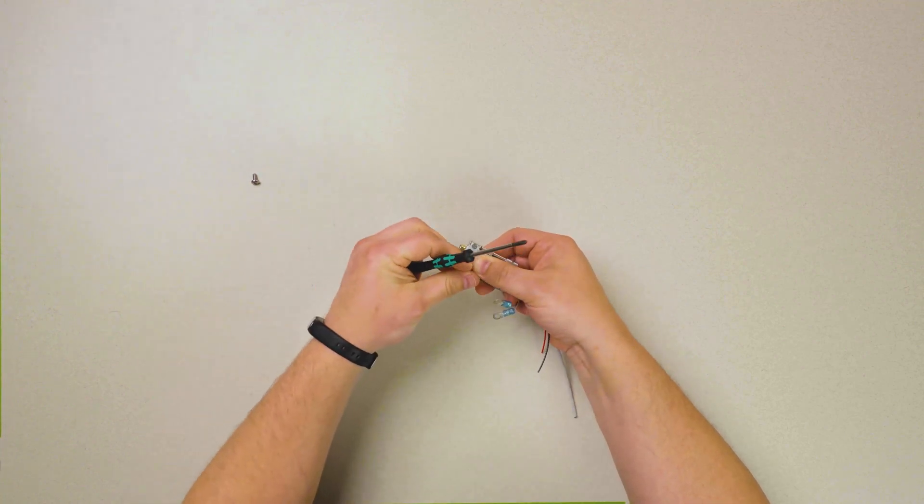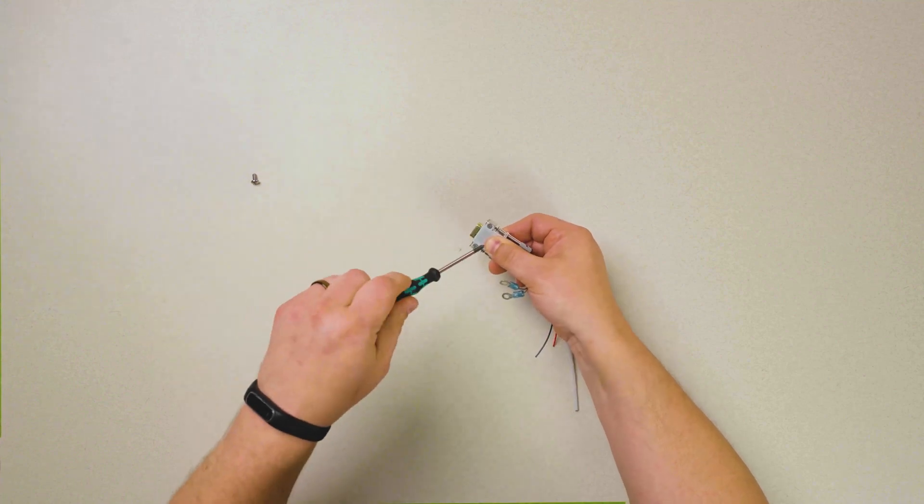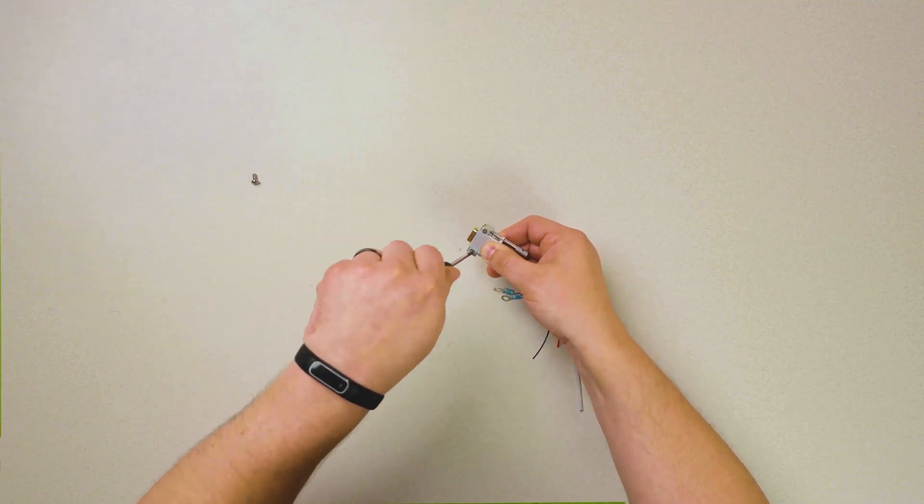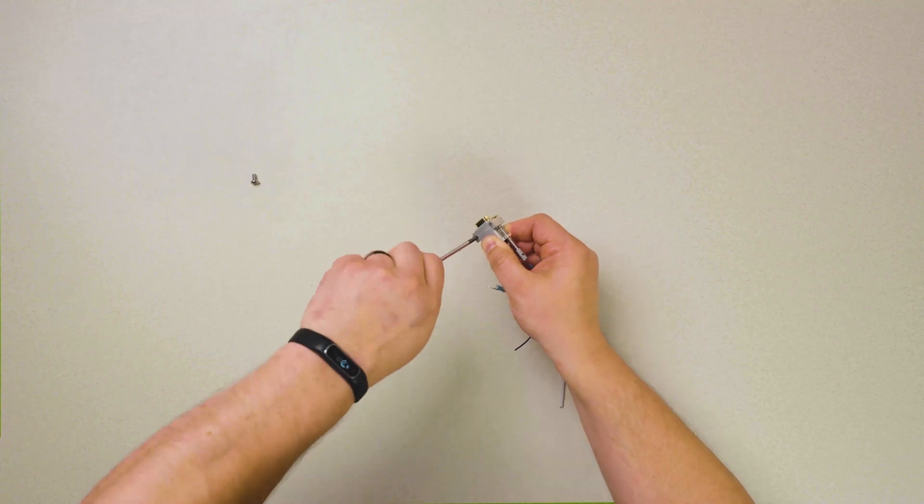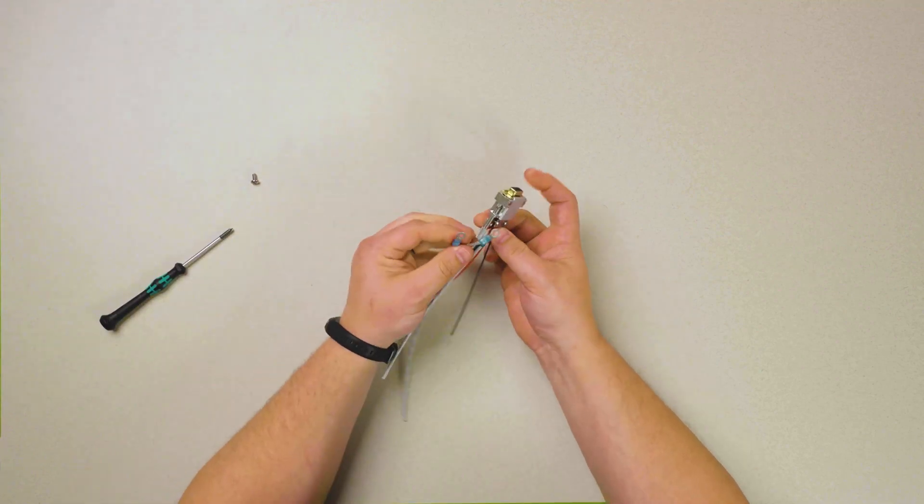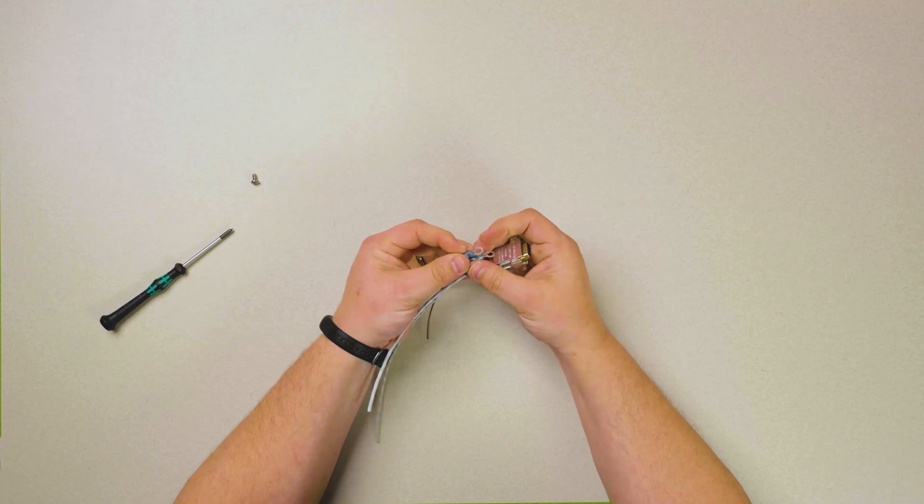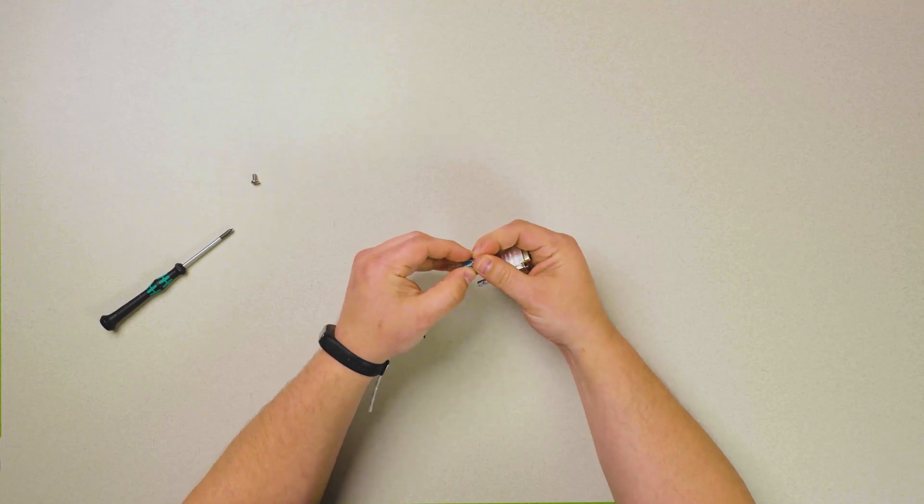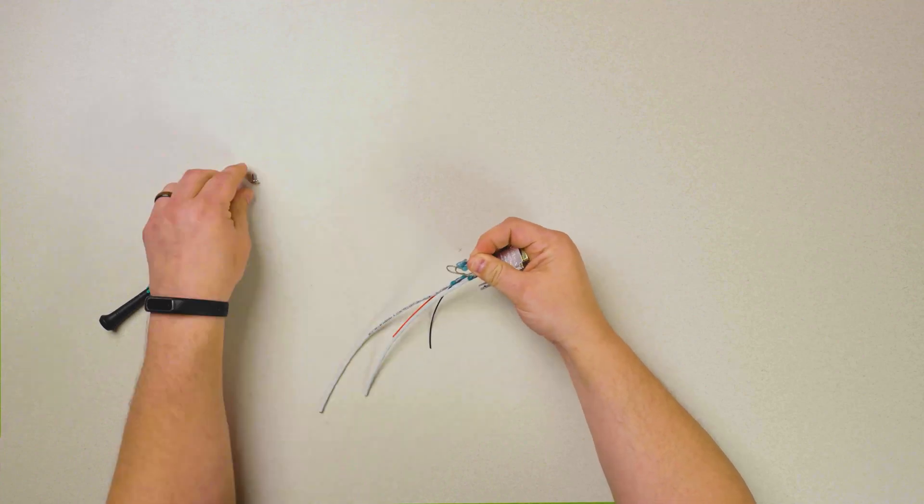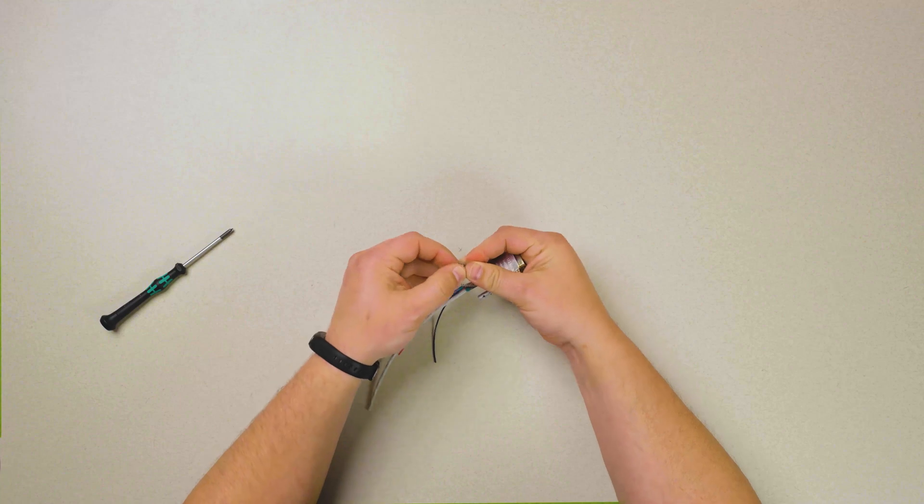So our back shell is finished. Our wires are no longer exposed. And then finally, we gather up our shield terminations and affix them to our back shell.